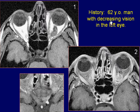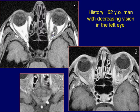A 62-year-old man with decreasing vision in the left eye. T1-weighted images of the orbit reveal an elongated mass lesion of intermediate signal intensity in the left optic nerve.